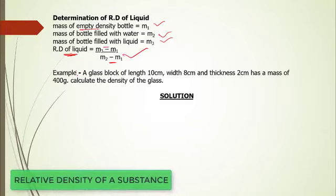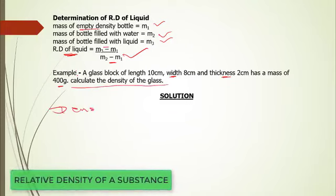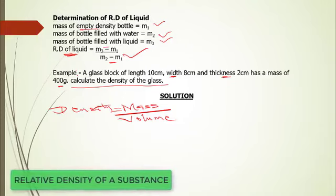Let's take an example. A glass block of length 10 cm, width 8 cm, and thickness 2 cm has a mass of 400 grams. We are asked to calculate the density of the glass. The formula for density is mass divided by volume. From the question, mass m equals 400 grams, but grams is not the SI unit for mass, so we need to convert 400 grams to kilograms.